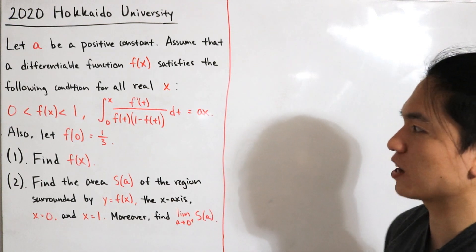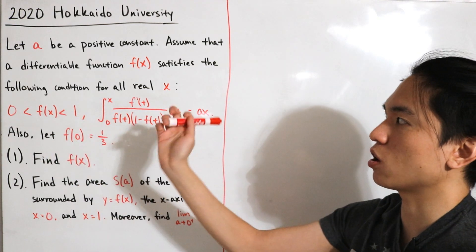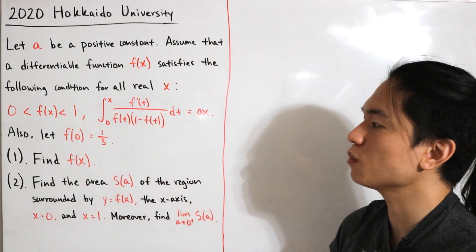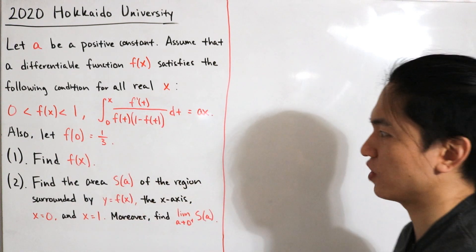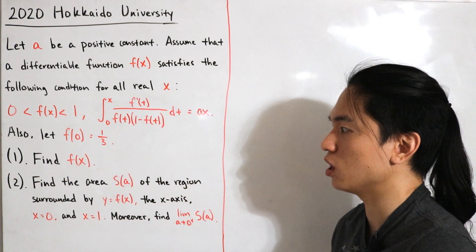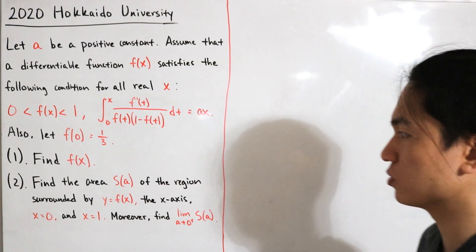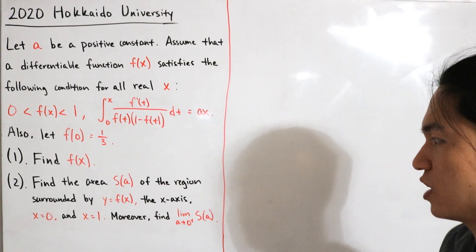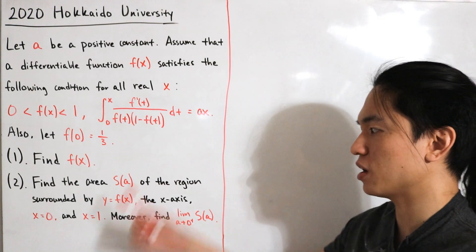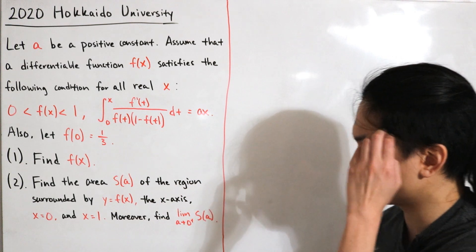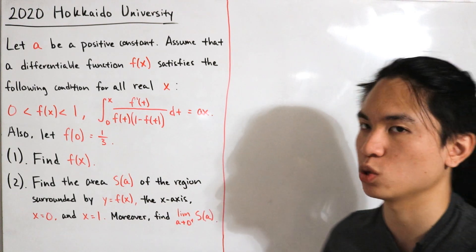This question is split into two parts. First, we want to find what f(x) equals such that it satisfies the given condition. Second, we want to find the area S(a) of the region enclosed by y = f(x), the x-axis, x = 0, and x = 1. Moreover, we also want to find the limit as a approaches zero from the right of S(a).